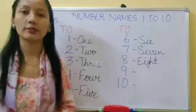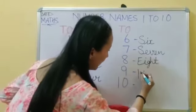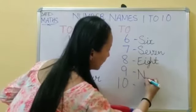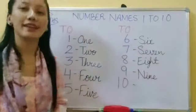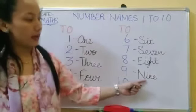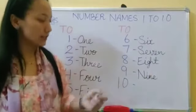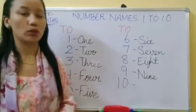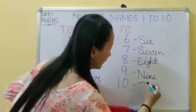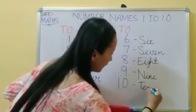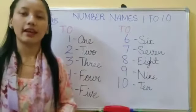Number 9 — what is the spelling of 9? Capital N, I, N, E — NINE. Number 10 — what is the spelling of 10? T, E, N — TEN. Very good!